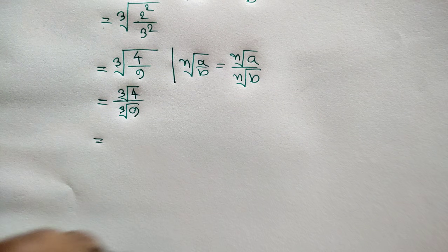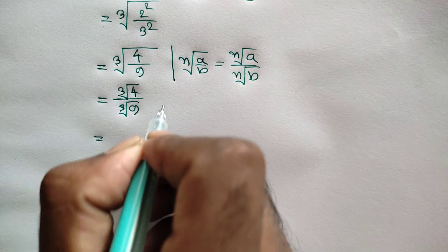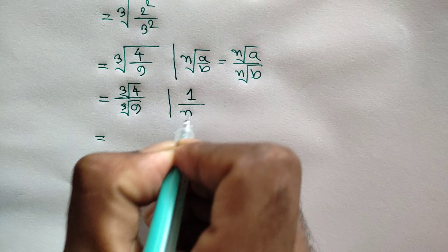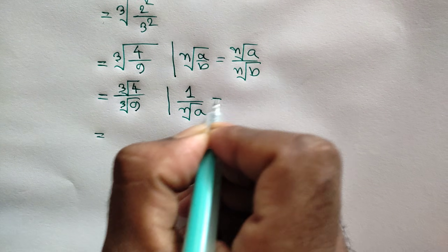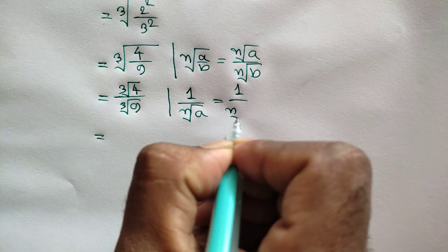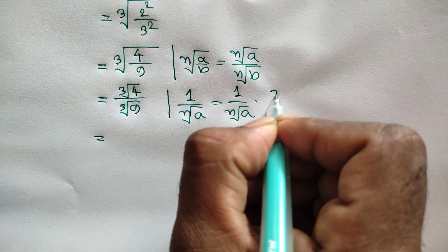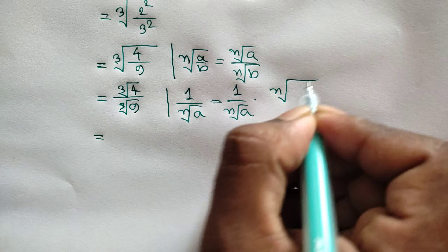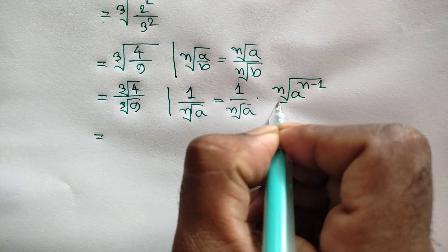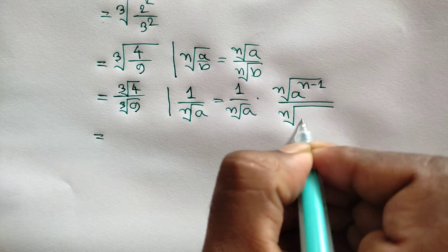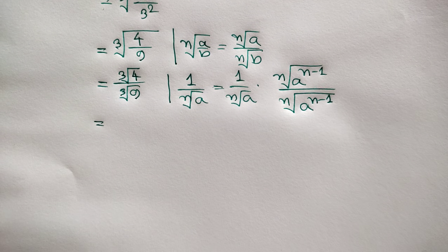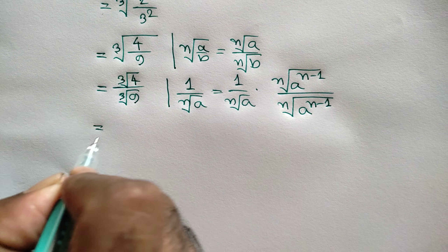We know that 1 over nth root of a is equal to 1 over nth root of a times nth root of a to the power (n minus 1). So we apply this rationalization rule here.